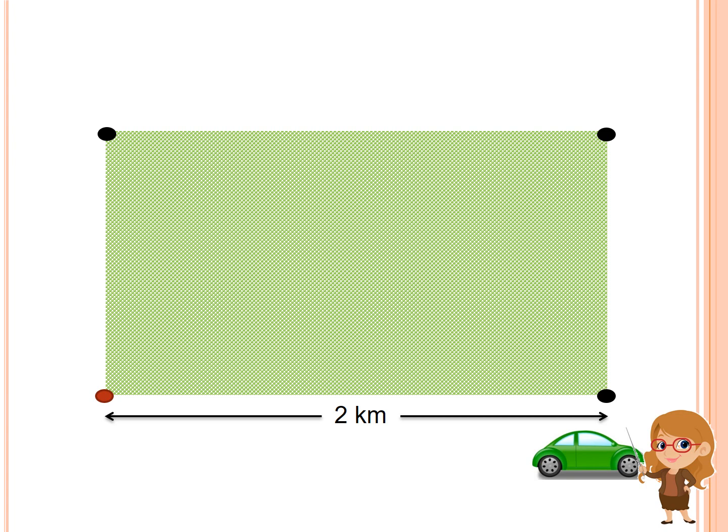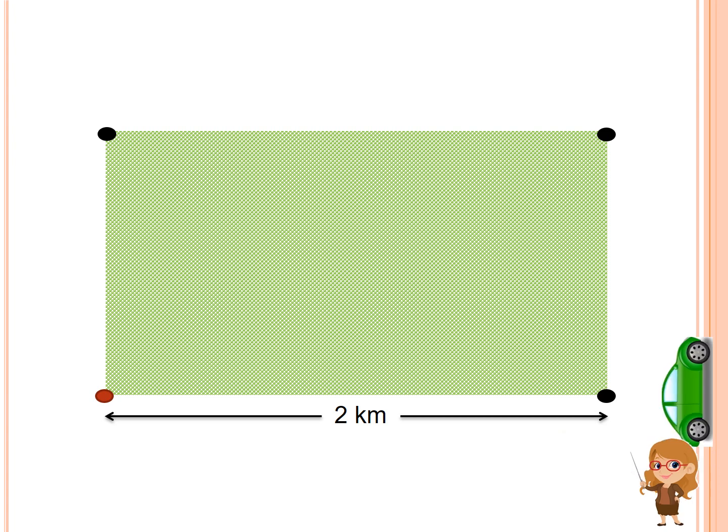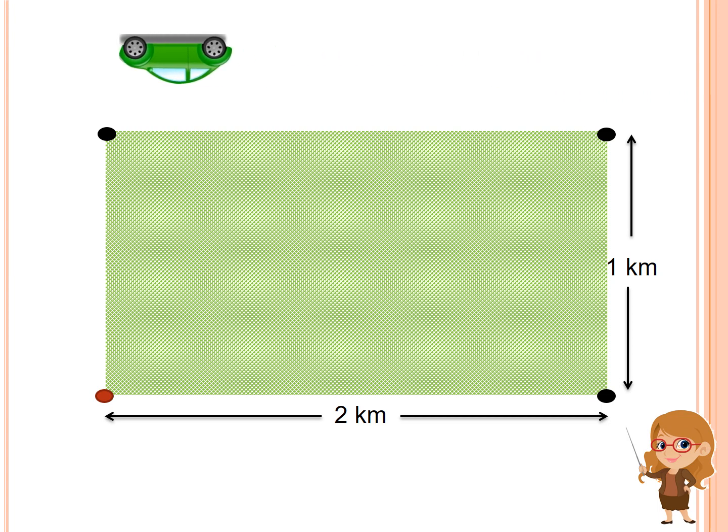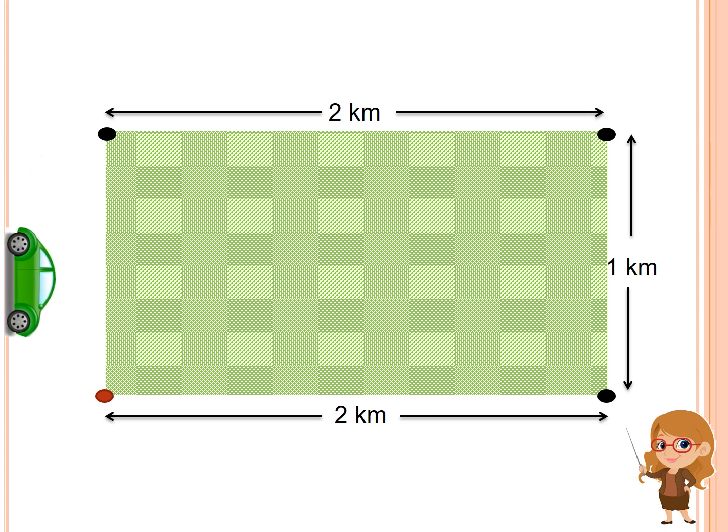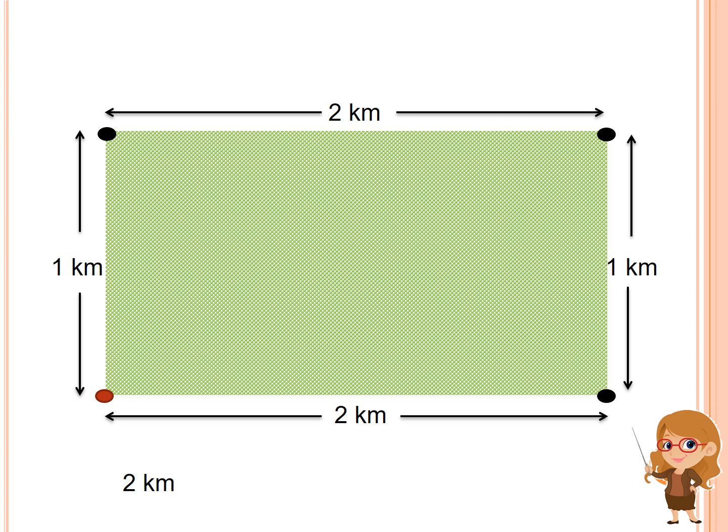2 km. 1 km. 2 kilometers. 1 kilometer. So we're going to add now all the measurements around the figure: 2 kilometers plus 1 kilometer plus 2 kilometers plus 1 kilometer equals 6 kilometers.